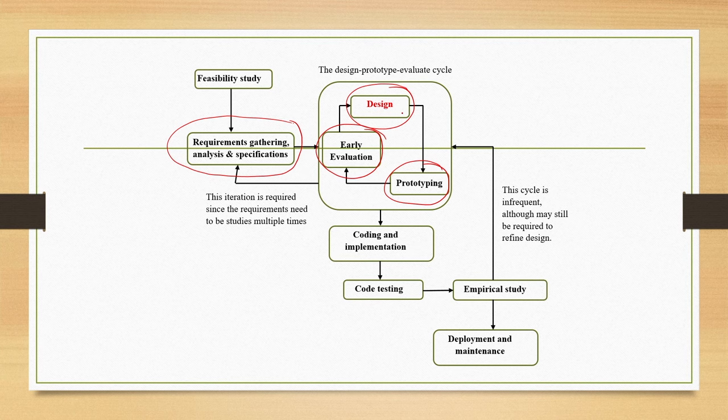Once we arrive at a stable interface design, then we go for implementation of the design. The first step of implementation is system design. So design also implies system design. Here with the name design, we are actually referring to both interface design as well as system design. For system design, of course, we do not require prototype and evaluation stages.